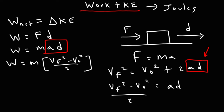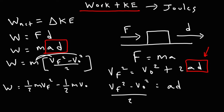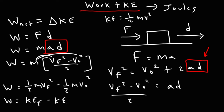So let's replace AD with what we have. Now I'm going to distribute the M and move the 2 to the front as one half. So M times V final squared over 2 is one half M V final squared. And M times negative V initial squared over 2 is negative one half M V initial squared. We know that kinetic energy is equal to one half MV squared. So one half M V final squared represents the final kinetic energy, and one half M V initial squared represents the initial kinetic energy.